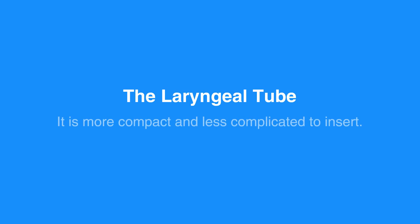The laryngeal tube advantages are similar to those of the esophageal tracheal tube. However, the laryngeal tube is more compact and less complicated to insert. This tube has only one larger balloon to inflate and can be inserted blindly.